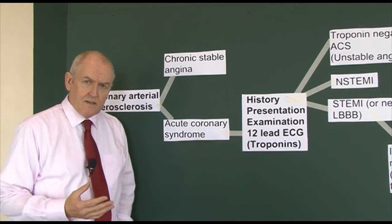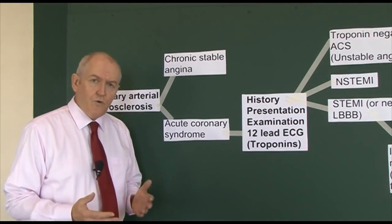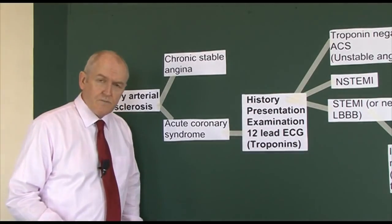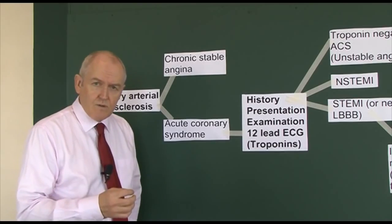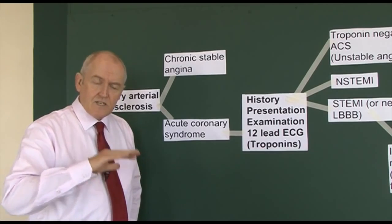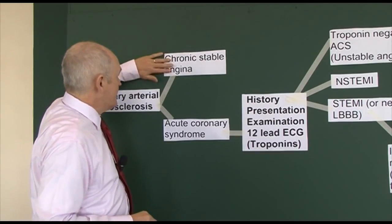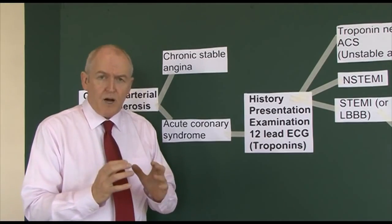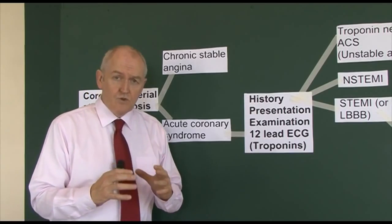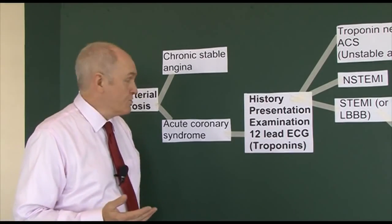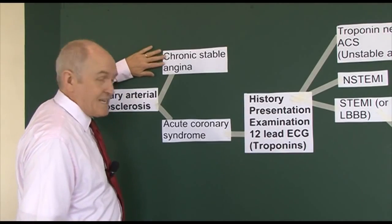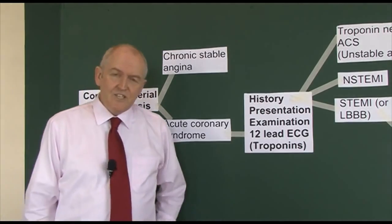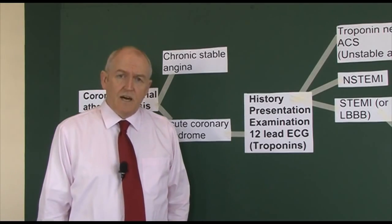How does this present clinically? There are two forms of presentation as a result of coronary arterial atherosclerosis. If the plaques are stable - if the roofs of the plaques are stable - then we're going to get chronic stable angina, if the atheromatous plaques are big enough to cause a partial occlusion of the coronary arterial lumen. This is sometimes called angina of effort, giving rise to the pain called angina pectoris.